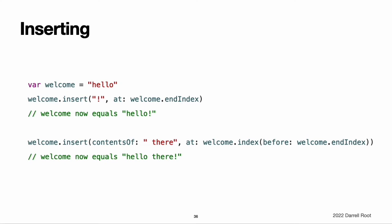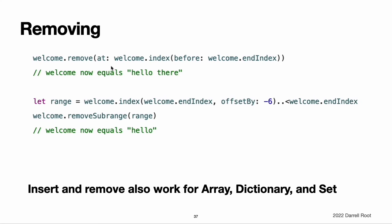To insert a single character into a string at a specified index, use the insert(_:at:) method, and to insert the contents of another string at a specified index, use the insert(contentsOf:at:) method. To remove a single character from a string at a specified index, use the remove(at:) method, and to remove a substring at a specified range, use the removeSubrange(_:) method. Note: you can use the insert(_:at:), insert(contentsOf:at:), remove(at:), and removeSubrange(_:) methods on any type that conforms to the RangeReplaceableCollection protocol. This includes String, as well as collection types such as Array, Dictionary, and Set.